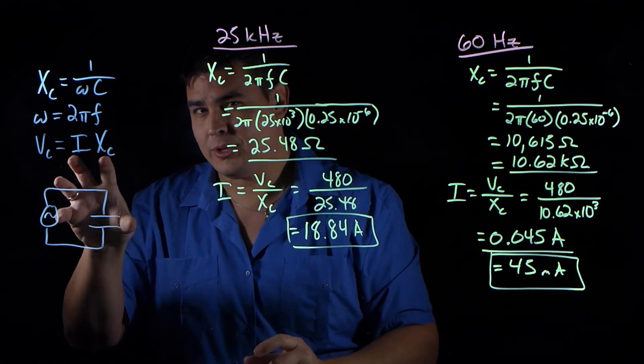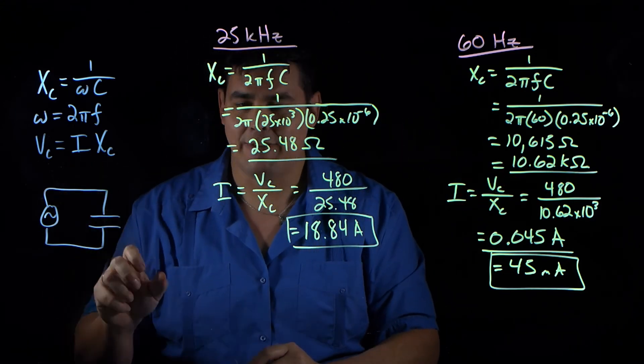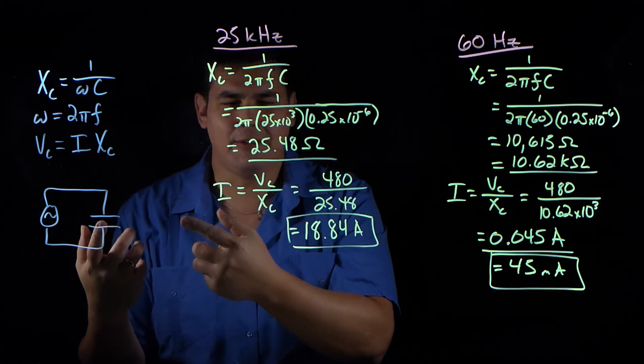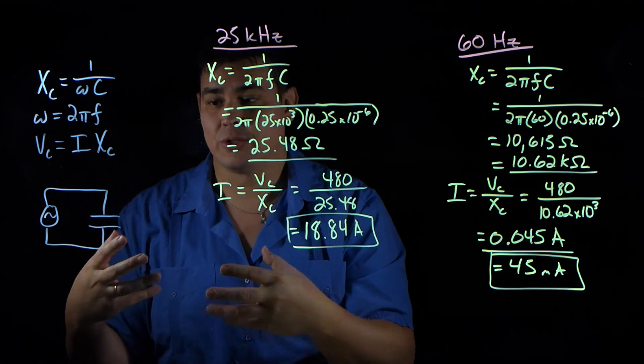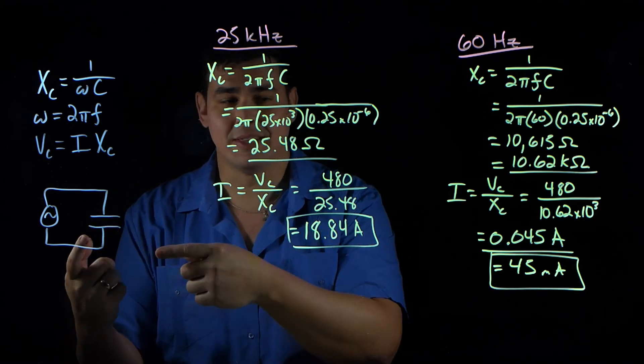But if you make the frequency high, so those electrons are sloshing back and forth really fast, then it never has time to fill up and slow down the current. So this is going to have a smaller reactance or resistance when it's at a high frequency than at a low frequency.